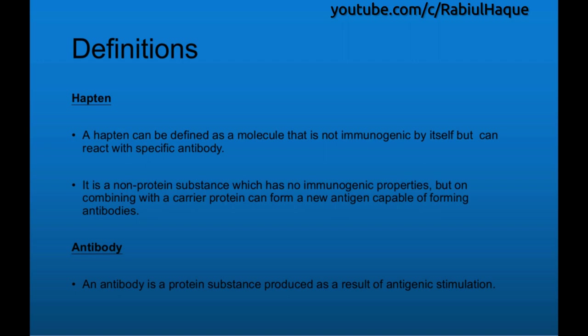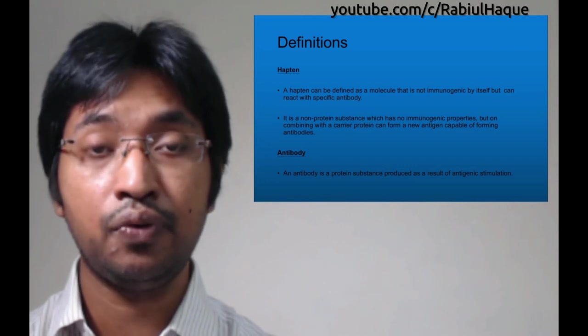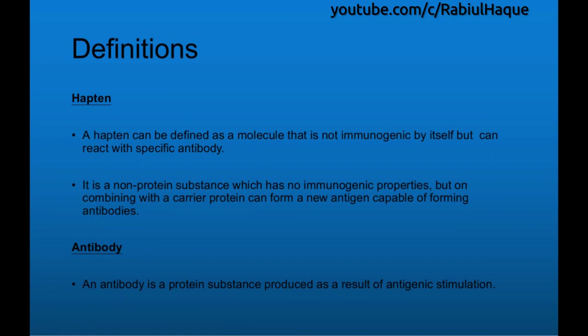What do we mean by hapten? A hapten can be defined as a molecule that is not immunogenic by itself but can react with specific antibody. Hapten is a non-protein substance with no immunogenic properties by itself. However, when hapten combines with a specific carrier protein, it can form a hapten-carrier conjugate that acts as a new antigen capable of forming antibodies. An antibody is a protein substance produced as a result of antigenic stimulation.